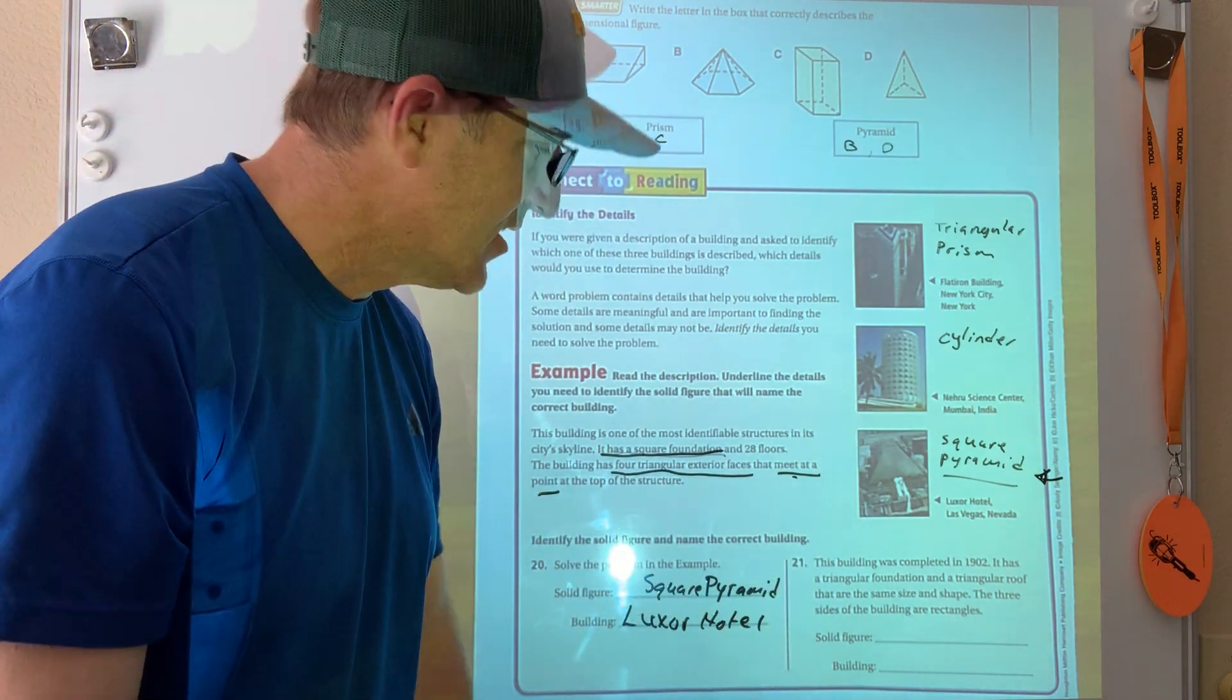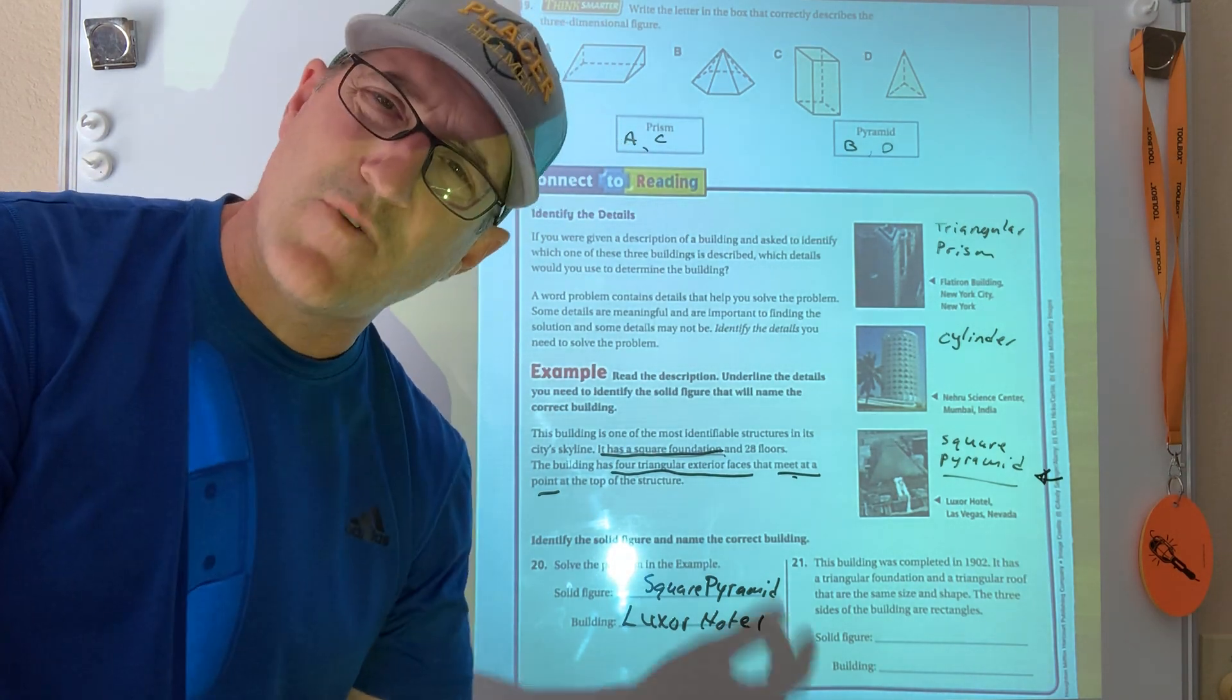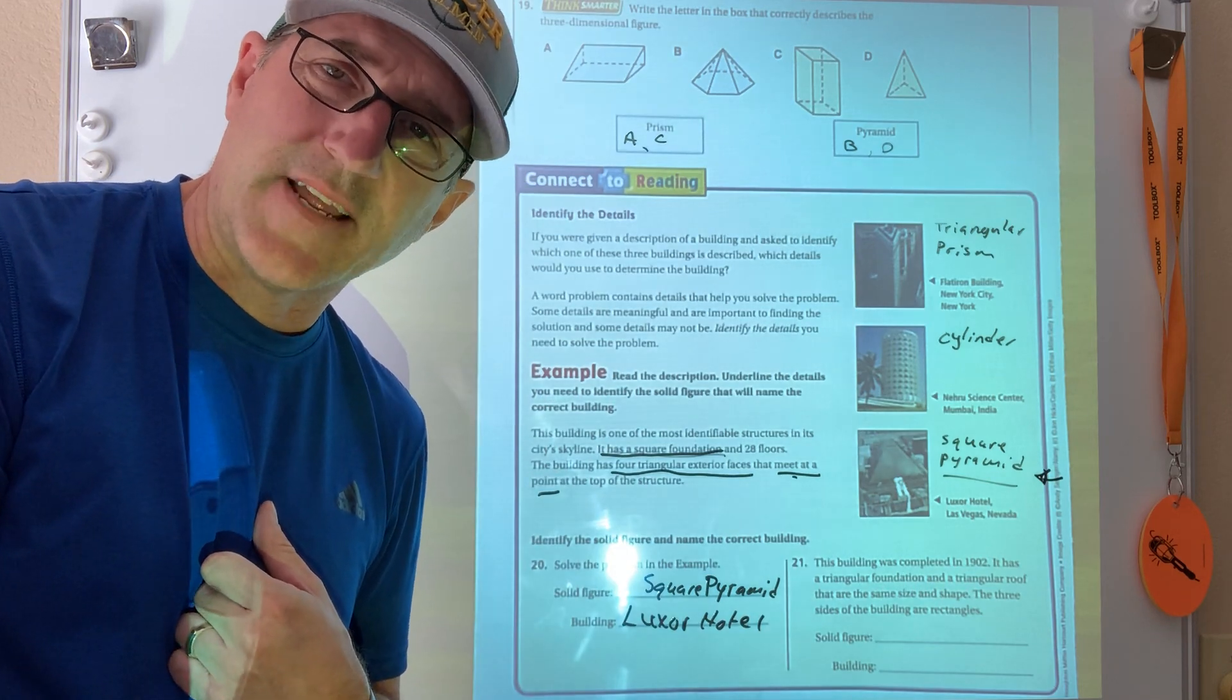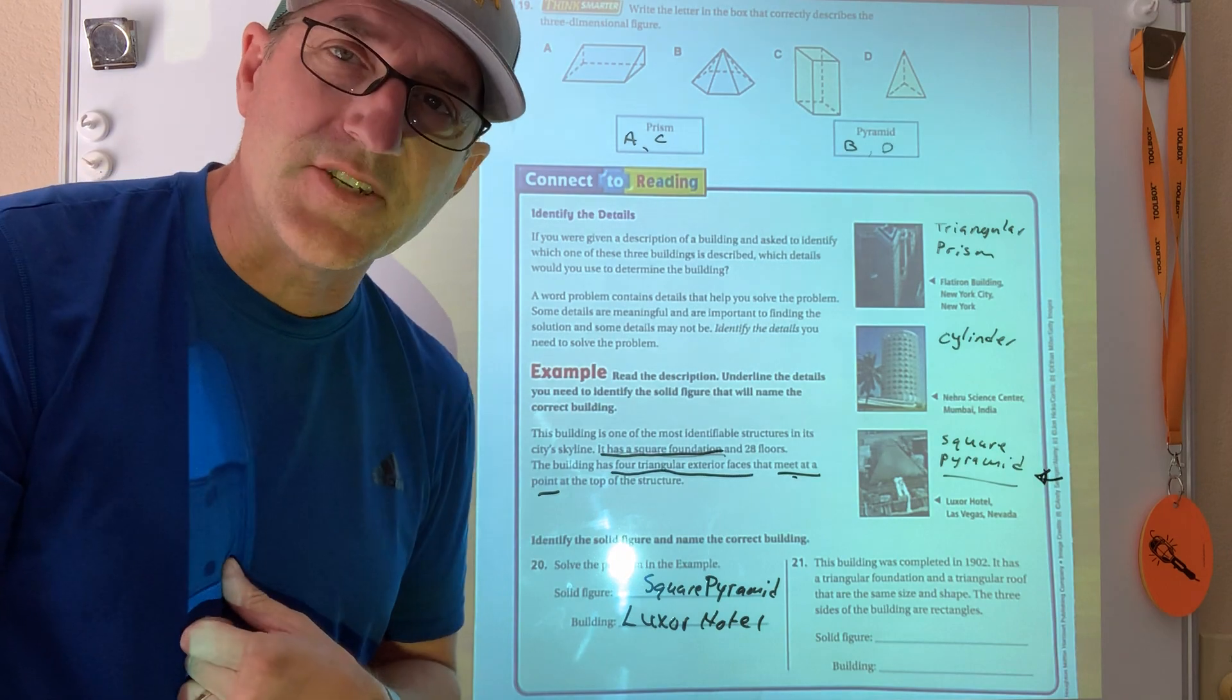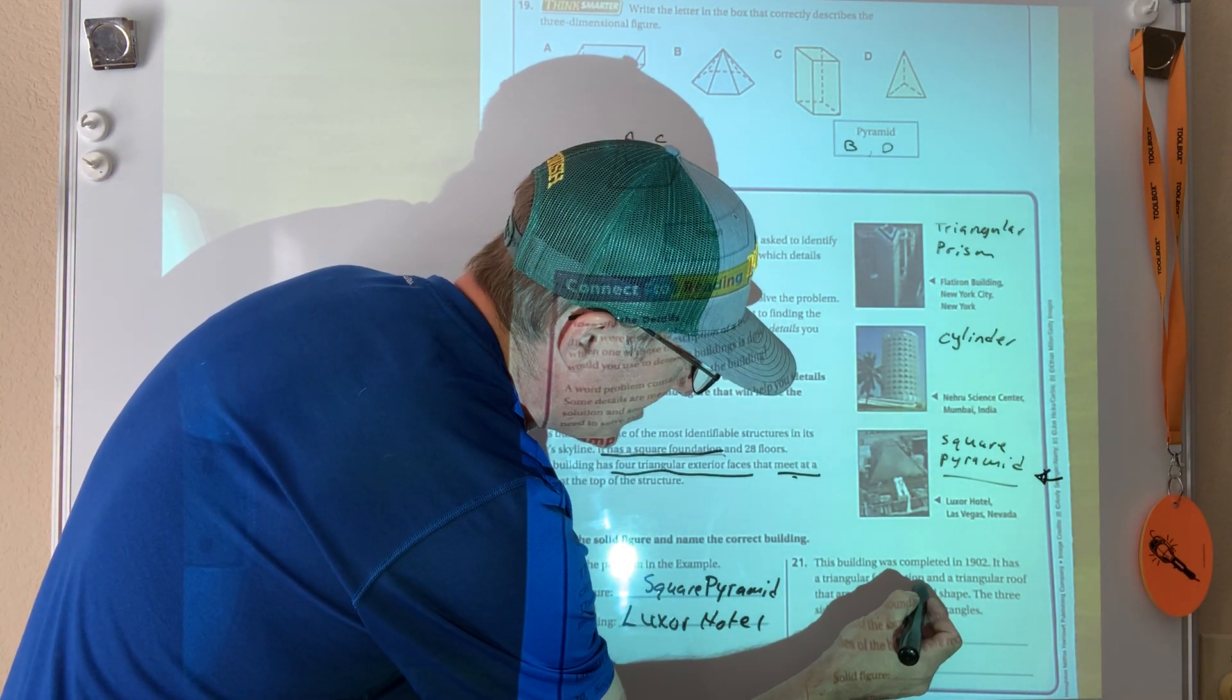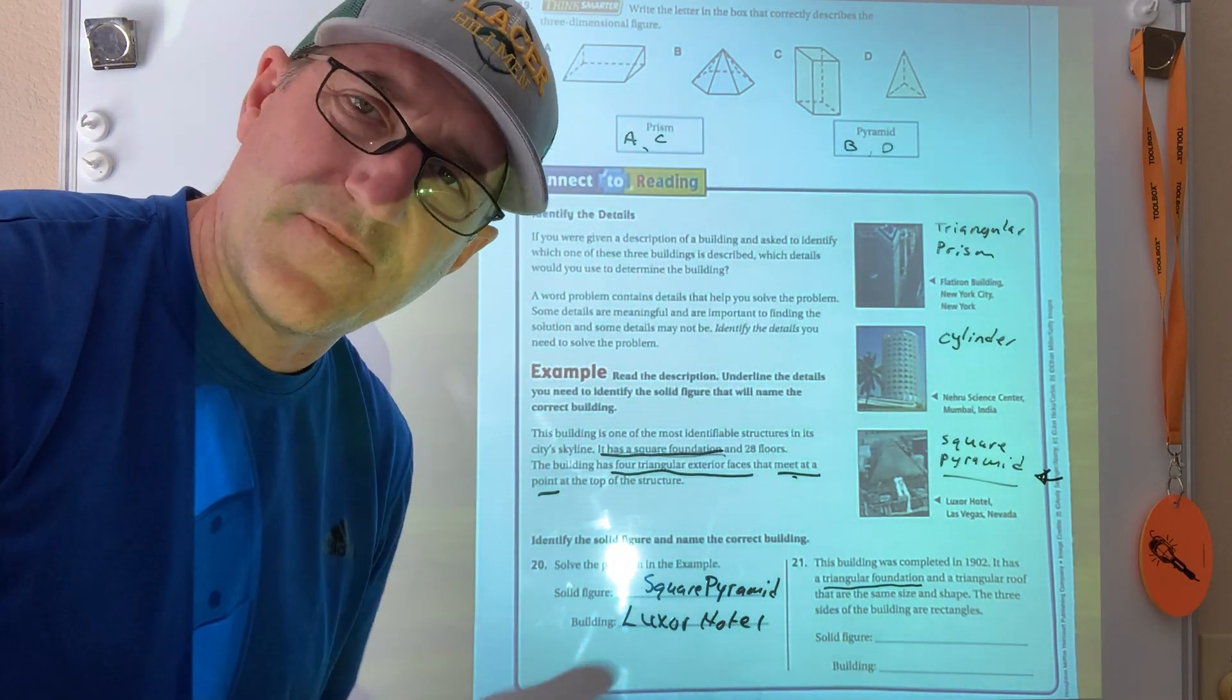Okay, this building, so we're going to do the same thing here. Underline what we think is important. This building was completed in 1902. This is, while a wonderful fact, it's not relevant to what I'm trying to do. 1902, though, pretty cool. It has a triangular foundation. Triangular, I need that, triangular foundation. When I see foundation, that tells me that it's a base, right? That's the foundation.